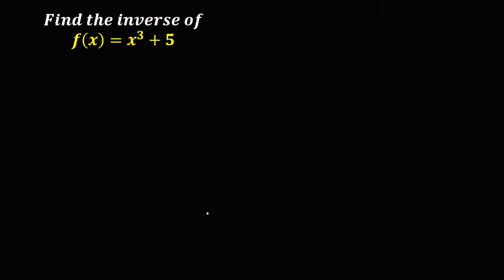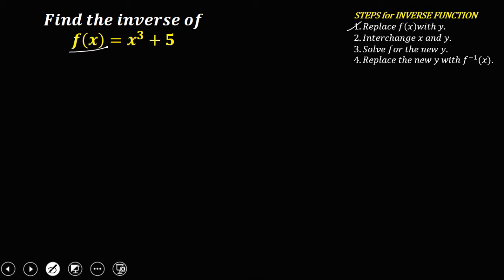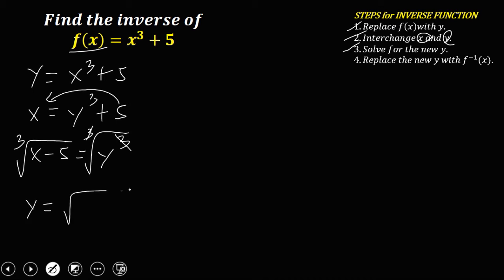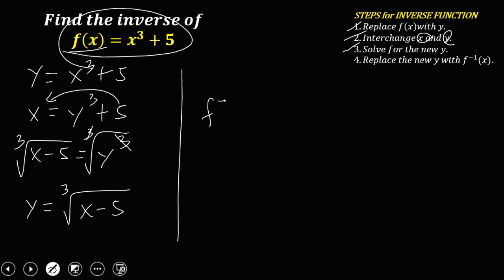For the next given, the same process. Replace f of x with y: y equals x to the power 3 plus 5. Then interchange the x and y, so x equals y cubed plus 5. Then solve for y — transpose, so x minus 5 equals y cubed. Then take the cube root of both sides. So y is equal to the cube root of x minus 5. Therefore, the inverse of this function, f to the negative 1 of x, is the cube root of x minus 5.